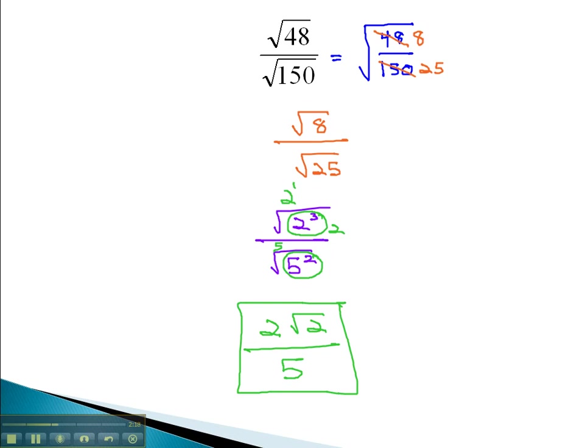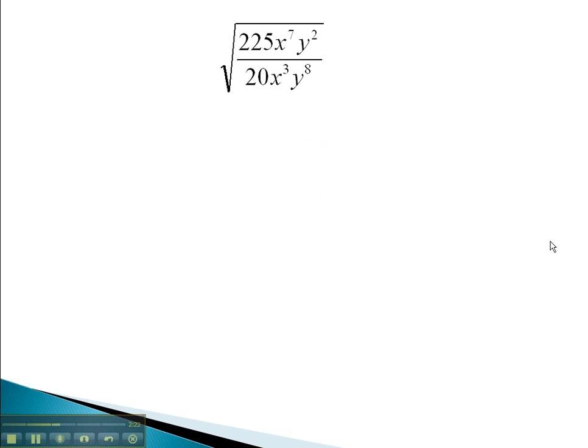Let's take a look at another expression where we simplify the fraction under the radical, and then simplify the radicals themselves. In this problem, you may notice that 225 and 20 are both divisible by 5. 225 divided by 5 is 45. 20 divided by 5 is 4.